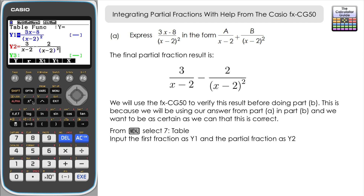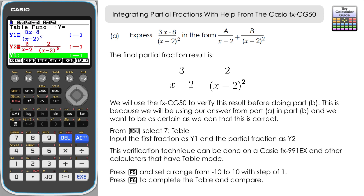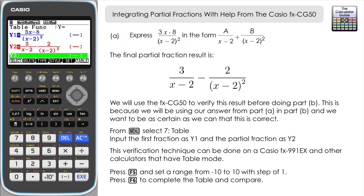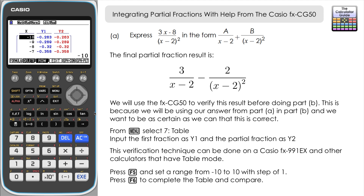You can also do this on the Casio ClassWiz FX-991EX, which has a table mode too. We set the range from −10 to 10 with a step of 1, press execute, then F6 to generate the table. Comparing the blue column (original fraction) with the red column (partial fraction form), we can see they give the same values, giving us 99.9% confidence that the partial fraction calculation is correct.